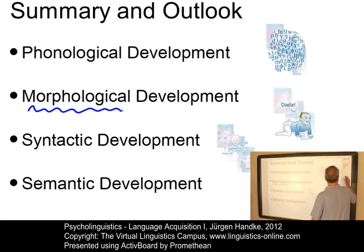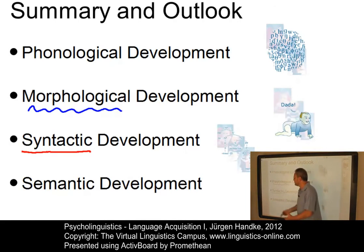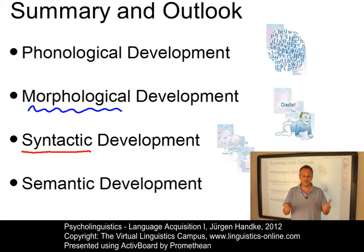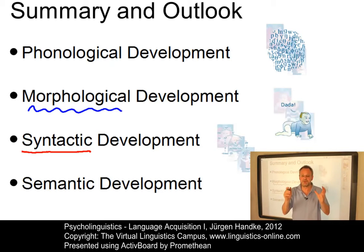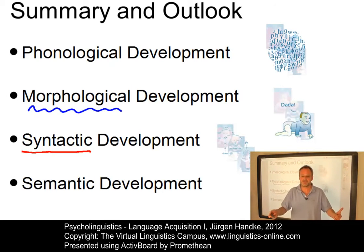And then the big area of syntactic development — that is, development of sentences starting with one-word utterances that do not show any structural properties and are used simply to name objects in the environment. Later, at the one-word stage, children also use single words to articulate complex thoughts involving those objects, and then produce more and more complex utterances. How they exactly proceed, we will see.